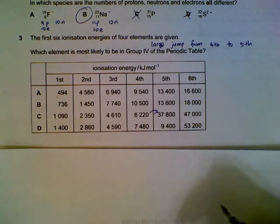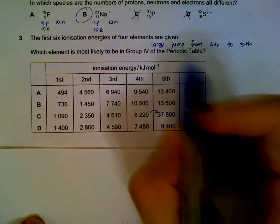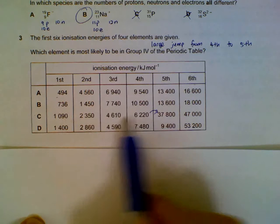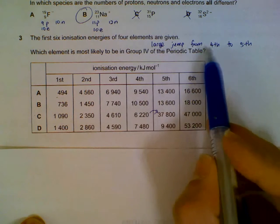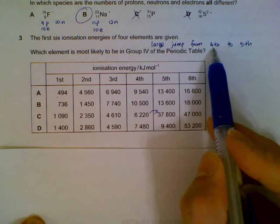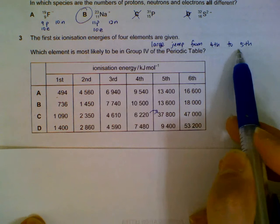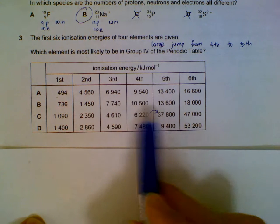Number three: which element is likely to be in group four? If it's group four, there will be a big jump when we go from removing four electrons to removing the fifth electron. We can do quick calculations and take the differences between each ionization energy.